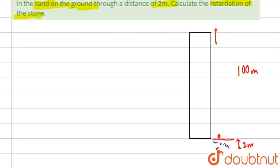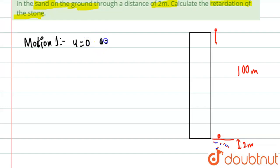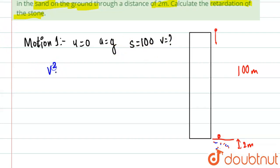We will find the acceleration at that point. Motion one is when the stone is falling from the building to the ground. Here u equals zero, acceleration equals 10 m/s² which is g, s equals 100 meters, and we need to find v. We will use the third equation of motion: v² = u² + 2as.